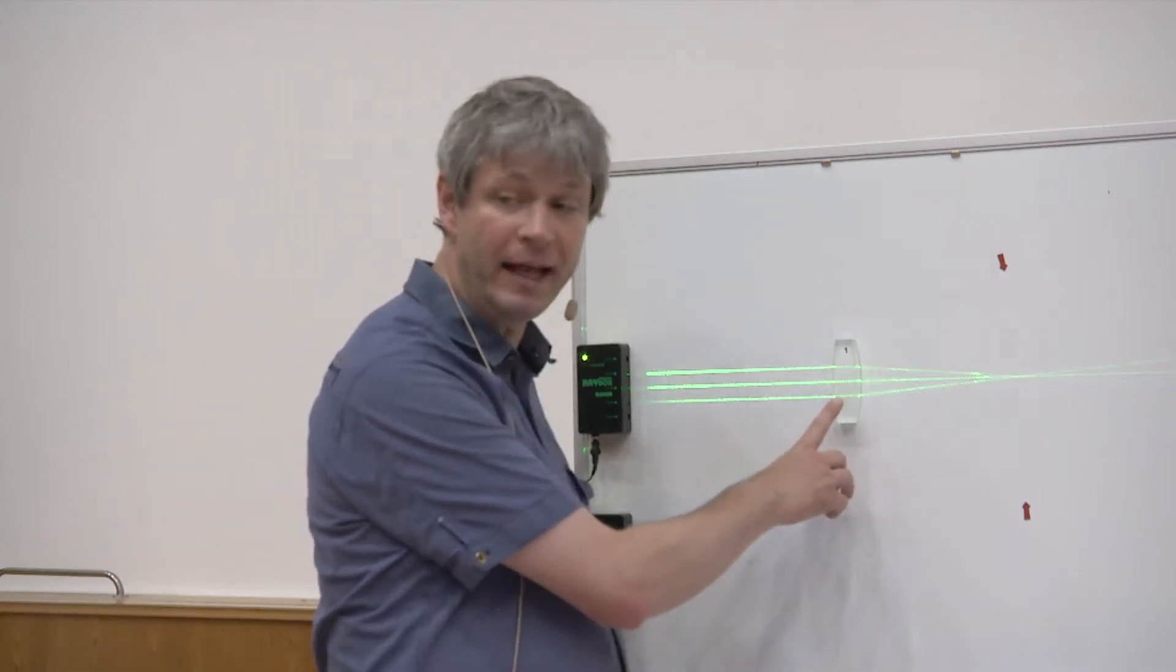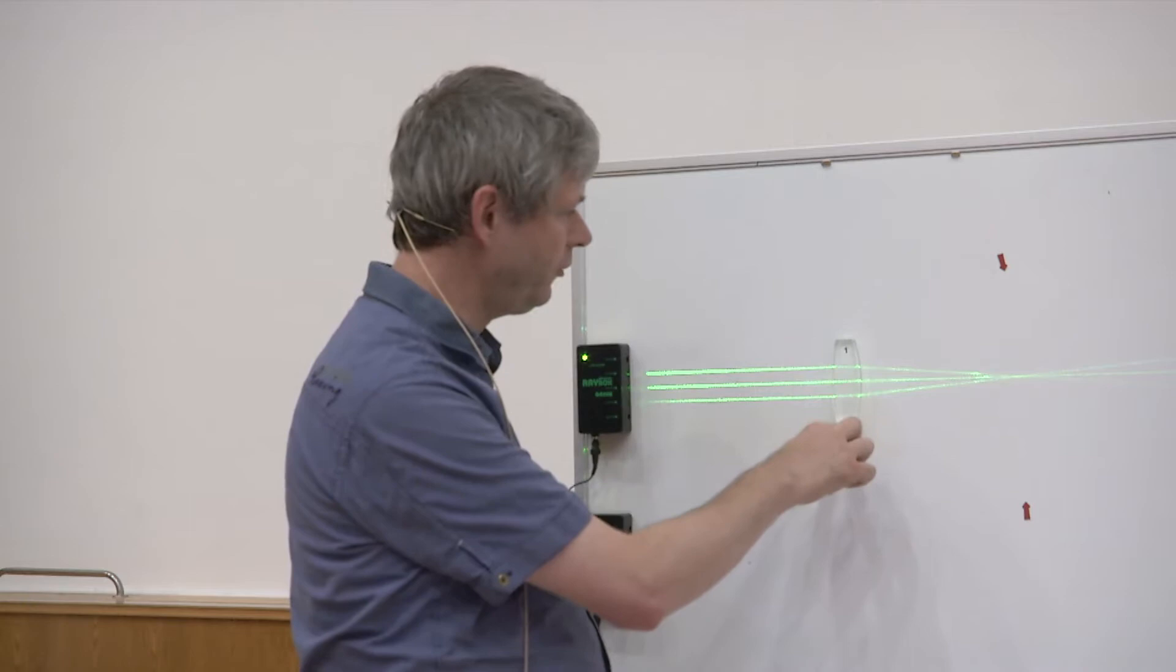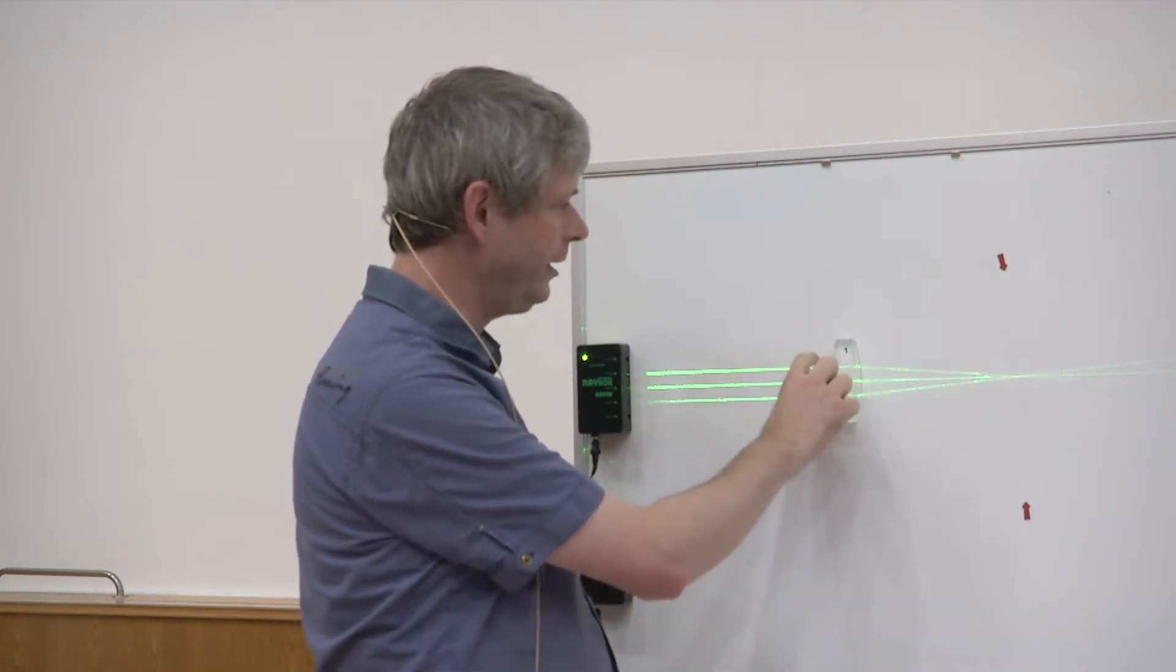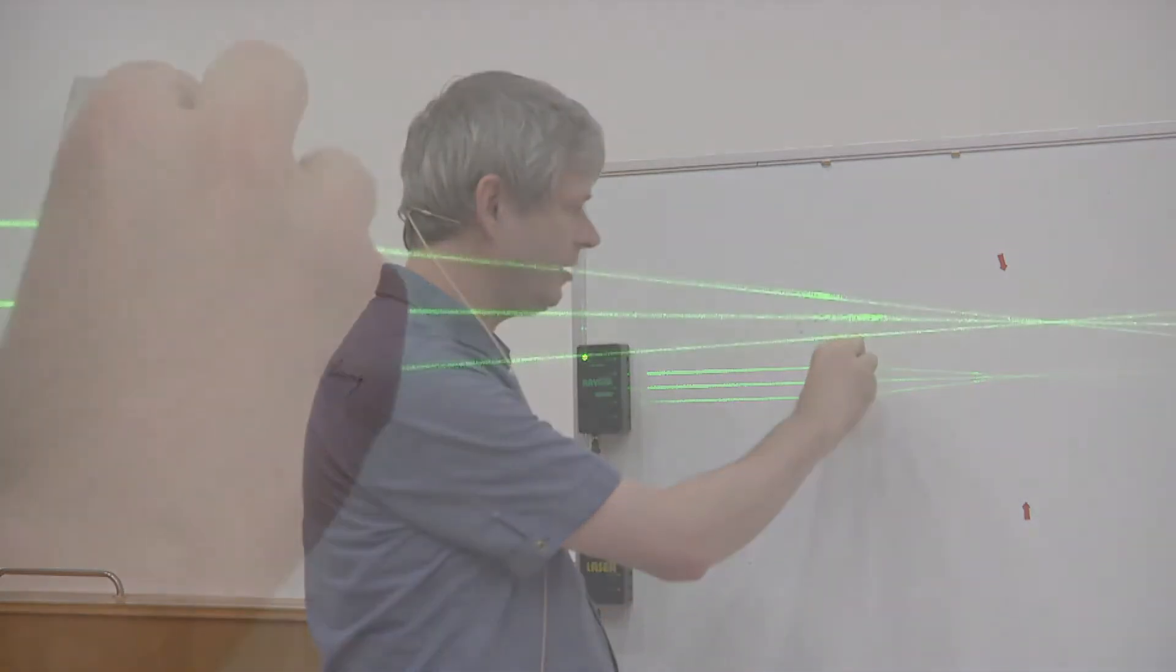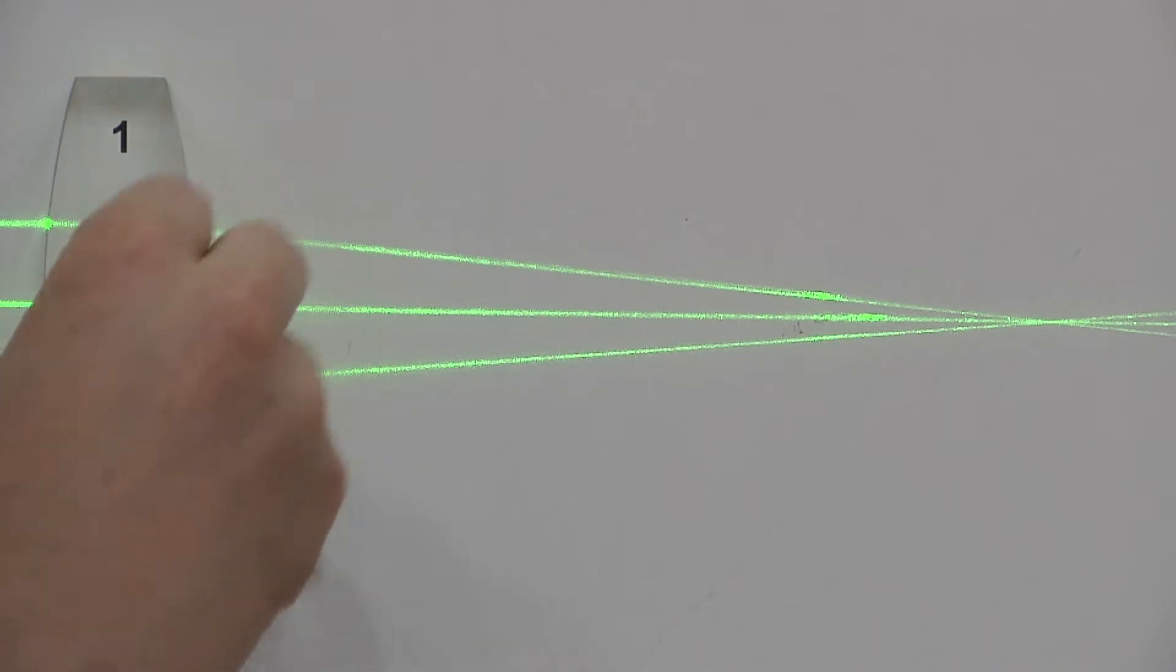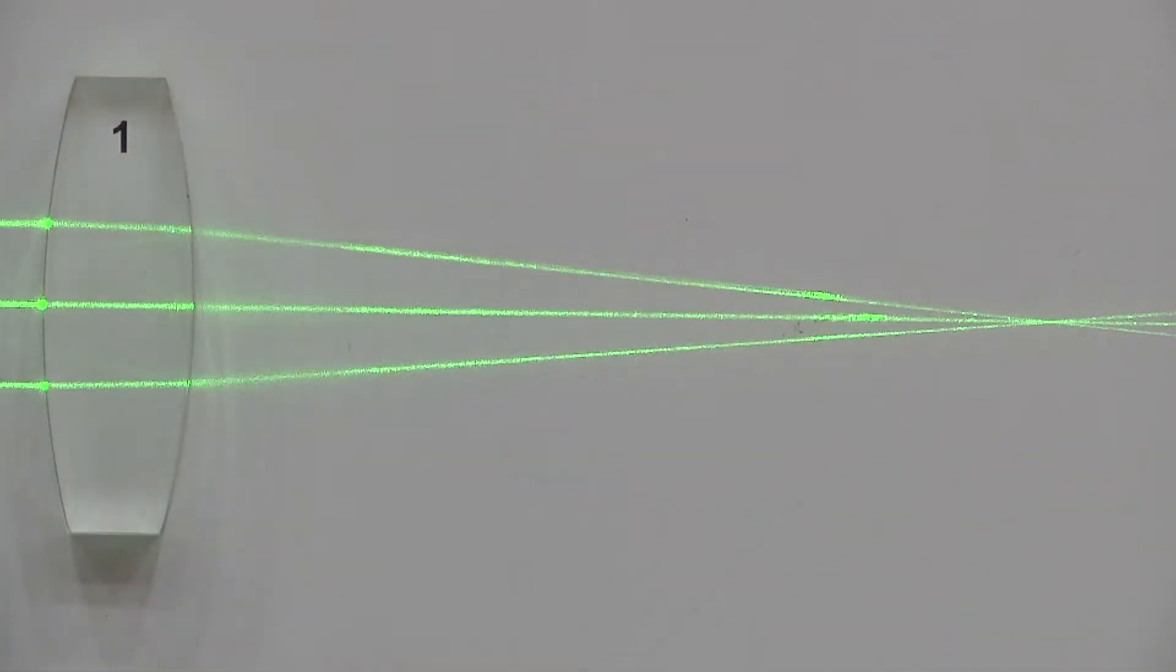So this is an example of a lens. You see two curved surfaces, one going from air into glass or plexiglass and from plexiglass back into air with a bi-convex lens.